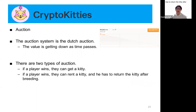Next, we cover auctions, which are an alternate way to obtain a kitty. In this game, the auction adopts a Dutch system — the value decreases as time passes. There are two types of auctions: the first is where if a player wins, they can get a kitty. The other is where if a player wins, they can rent a kitty but must return it after breeding.